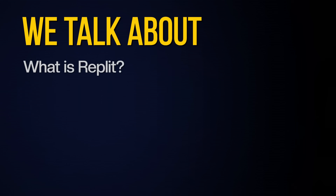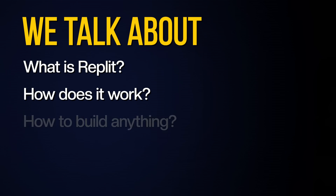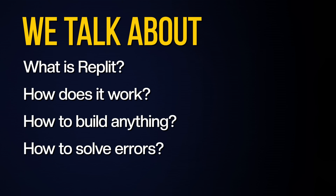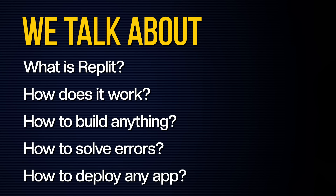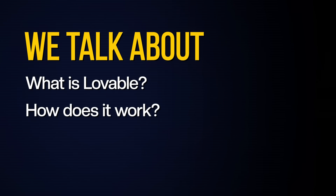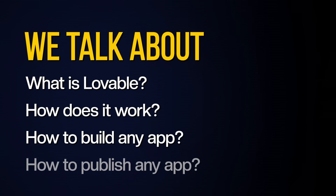In this video, we discussed everything: what is Replit and how it works, how to build anything you want with it, how to solve errors, and how to deploy any app on Replit. We also took a look at Lovable, how it really works, how to build any app with it, and how to publish any application on Lovable. This was an in-depth guide on vibe coding and how to build anything you want without knowing how to code, just with the help of AI coding agents.